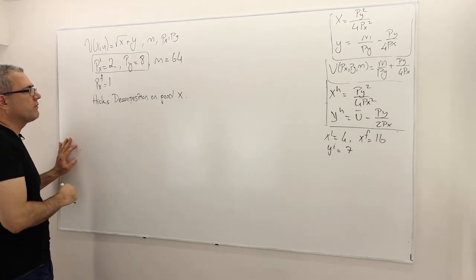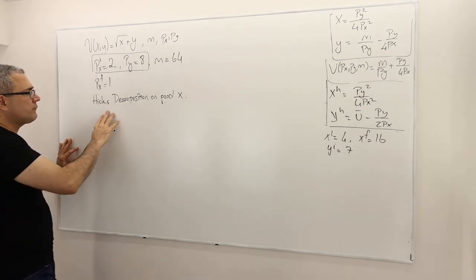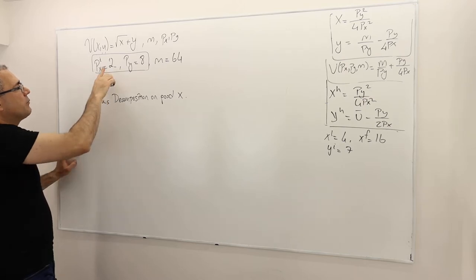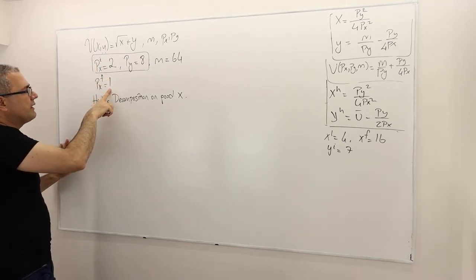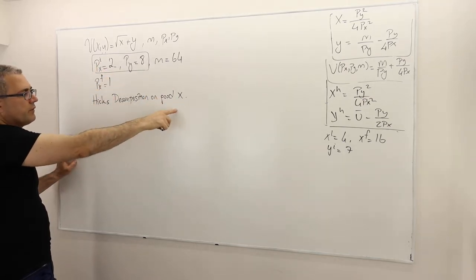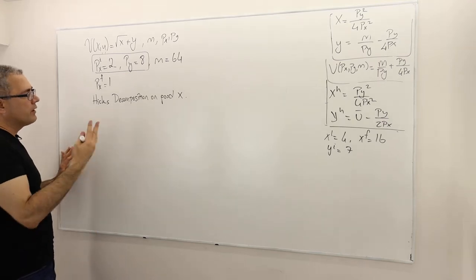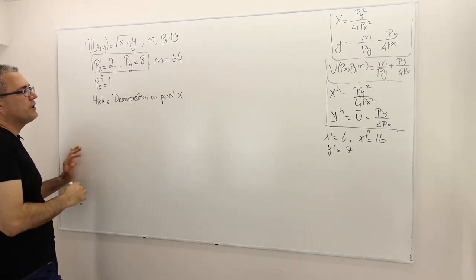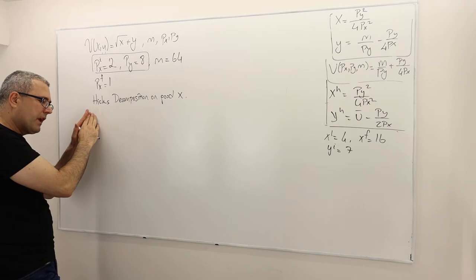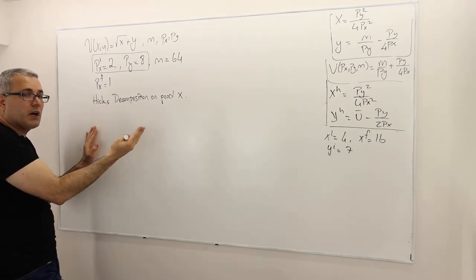There is no specific reason. So once again, the price of good X decreases to a dollar. Then the demand for good X will change. And the question is, what's the Hicks decomposition? What is the income effect and the substitution effect according to Hicks?